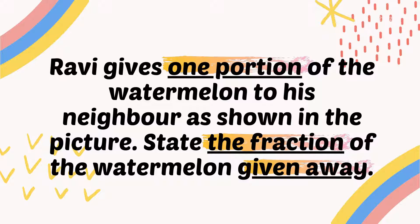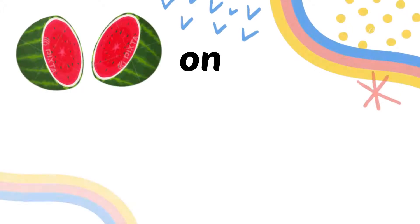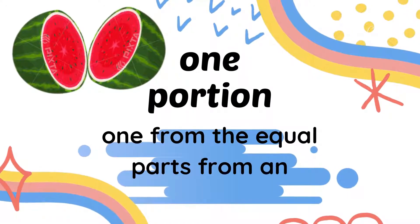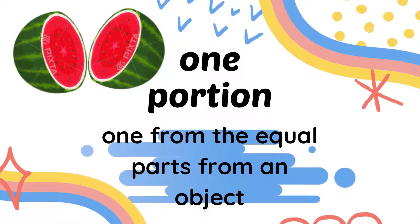Now I'm going to explain to you what is the meaning of 'one portion' in the question. One portion means one from the equal parts of an object. In this case, one part of two equal parts of the watermelon.